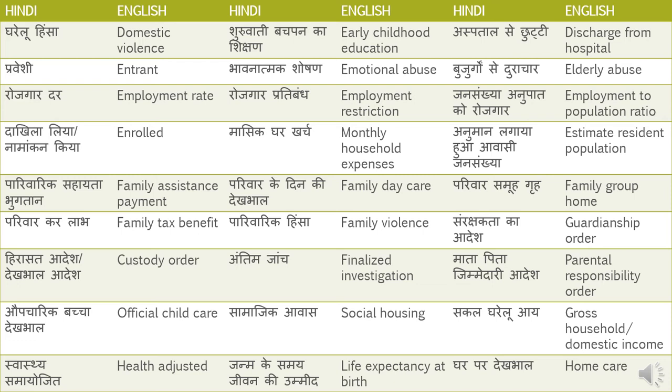Sanrakshata ka adesh — Guardianship Order. Hirasat adesh ya dekbhal adesh — Custody Order. There are two uses: hirasat adesh is custody order in the context of an arrest, and dekbhal adesh is used when a child's custody is being decided.